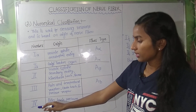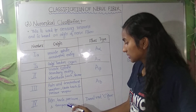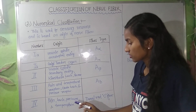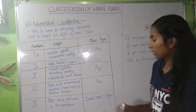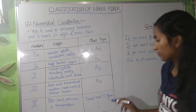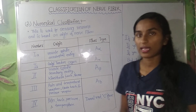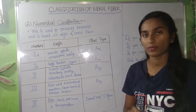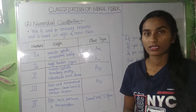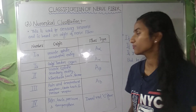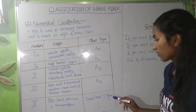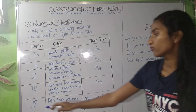The fourth number corresponds to pain, touch, pressure, and temperature receptors. The fiber type is the dorsal root C fiber. C fiber is divided into two groups: dorsal root and sympathetic nerve fiber. So dorsal root C fiber is assigned the fourth number.